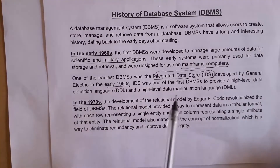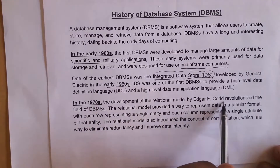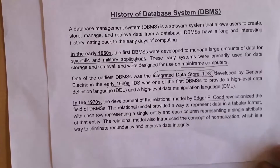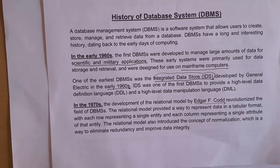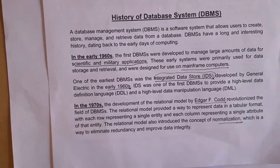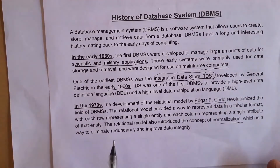In the 1970s, the relational model was developed by Edgar F. Codd. He is the person who developed the relational model. The relational model is nothing but data stored in the form of tables — that is, in the form of rows and columns. In the relational model, we can use normalization, which improves data integrity and eliminates data redundancy.